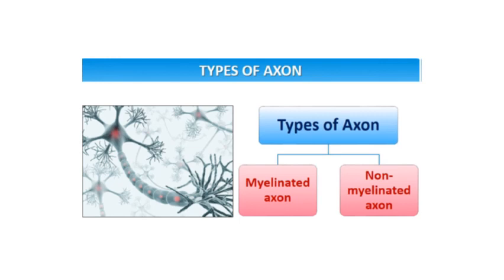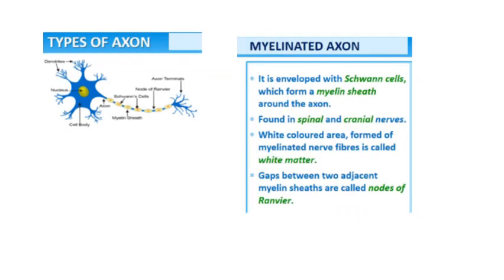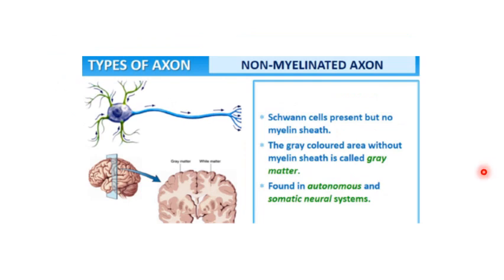These axons can be of two types: myelinated axon and non-myelinated axon. Myelinated axons are the ones which have a myelin sheath covering them. They are enveloped with Schwann cells which form the myelin sheath around the axon, and are generally found in spinal and cranial nerves. The white-coloured area formed of myelinated nerve fibres is called the white matter, and the gaps between two adjacent myelin sheaths are called the nodes of Ranvier, visible as the blue region between the myelinated portions. In non-myelinated axons, Schwann cells are present but there is no myelin sheath. The grey-coloured area without the myelin sheath is called grey matter, and this is generally found in the autonomic and somatic nervous systems.